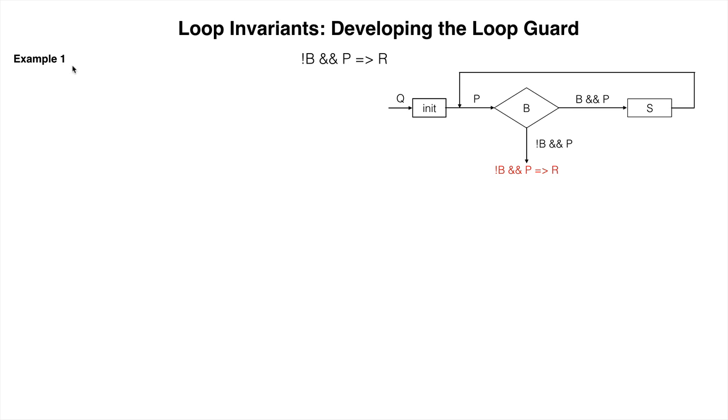Here are the invariant, P, and post condition, R, for our first example. P is: S is the sum of M dot dot K minus 1, combined with K is at least M and at most N. R is: S is the sum of M dot dot N minus 1.